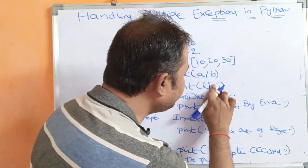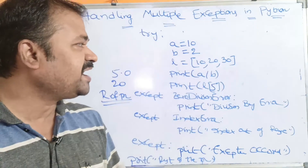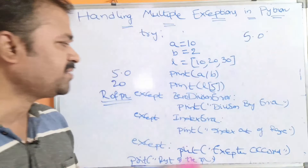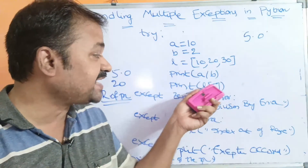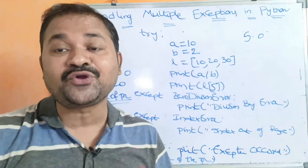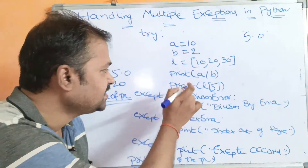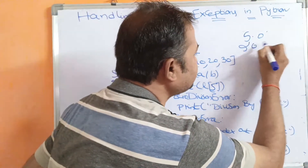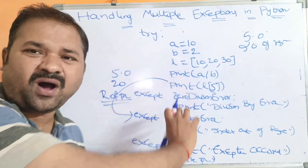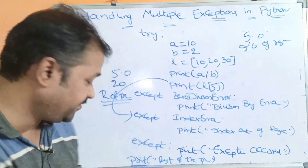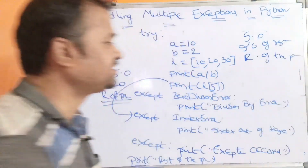Now let's introduce a mistake: instead of L[1], we access L[5]. print(a/b) gives 5.0 with no problem, but accessing L[5] is beyond the valid range, so an IndexError exception is raised. The control goes to the except block handling IndexError, and we get the message 'index out of range'. Only one except block executes, then control exits all except blocks and 'rest of the program' is printed.